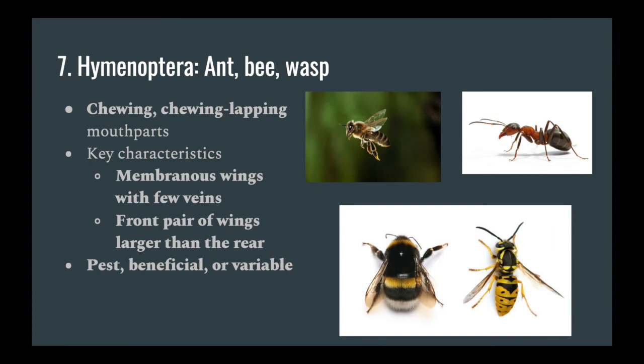Up next is Hymenoptera — ants, bees, and wasps. They'll always have two sets of wings with few veins, although they'll still be considered to be membranous wings. The front wings are going to be larger than hind wings, and they may serve many ecological roles, but they're typically good pollinators. Many of the females in this order will have some adaptation to sting.